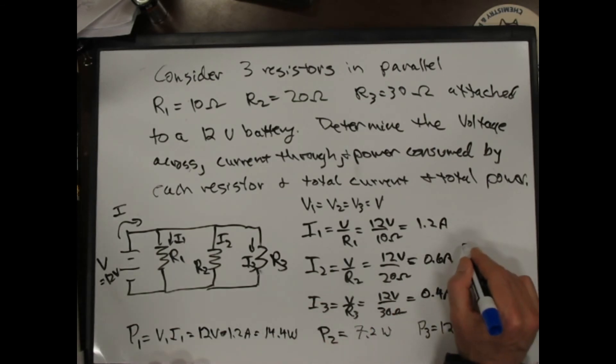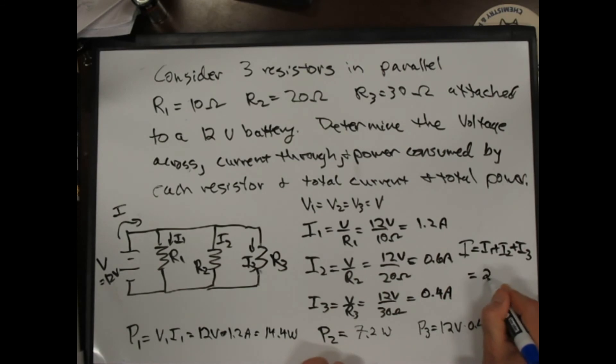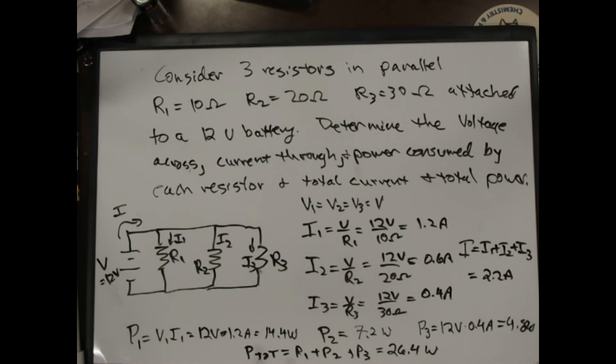I could say the total current, and that's 1.2 plus 0.6 plus 0.4, which is 2.2 amps. Similarly, I could say the total power consumed is P1 plus P2 plus P3. If I add these, I get 12 plus 14.4, which is maybe 26.4 watts. Let's do that again. 0.4 plus 7 is 8 and 4 is 12, 26.4 watts.